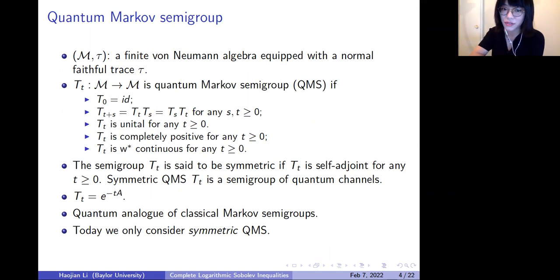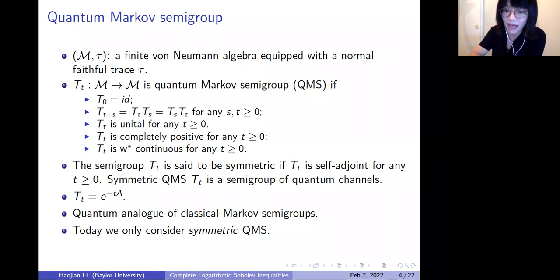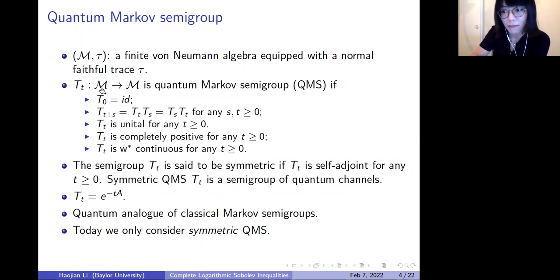Today we restrict ourselves to a finite von Neumann algebra with a normal faithful tracial state. If you are not familiar with von Neumann algebras, you can think of M as a family of finite dimensional matrices, and tau, the trace, you can think of as the normalized trace. A quantum Markov semigroup is a unital completely positive semigroup which satisfies some continuity conditions. You can think of a quantum Markov semigroup as a non-commutative version of the classical Markov semigroup. Also, if we replace M by some L-infinity space, this will become a classical Markov semigroup.